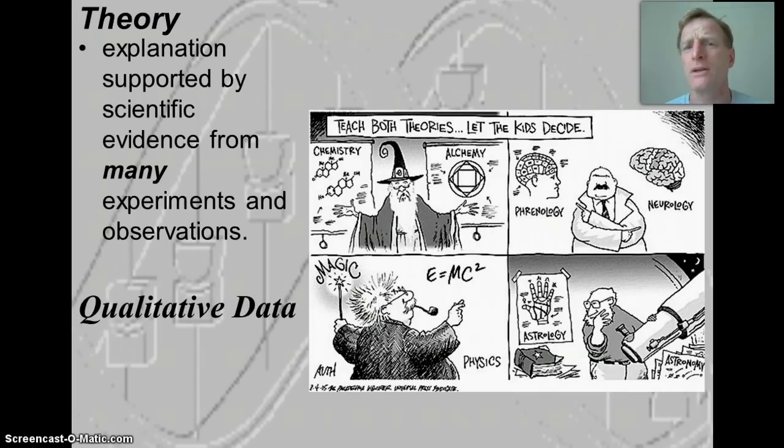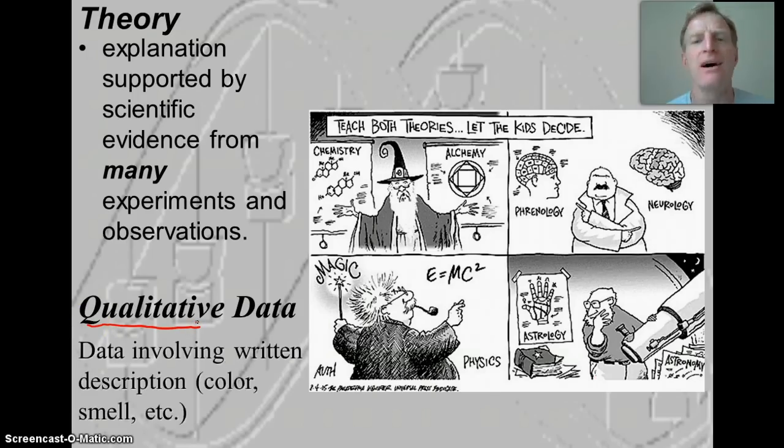Now I want to talk about the two different types of data we're going to collect in biology class this year. The first is qualitative data. And you can see in qualitative data, the word quality is in there. And this is, when we say quality, this is descriptive data, the color, the smell. So, if I've got a plant and the leaves are turning yellow, that tells me something versus a plant that has nice dark green leaves. That yellow plant is probably not very healthy.